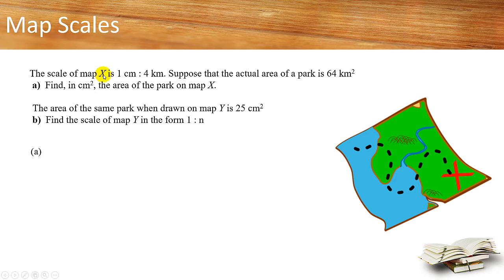So the scale for map X is 1 cm to 4 km. From here let's find the area scale. Let's square both sides. So 1 cm² will be equivalent to 4 km², which equals 16 km². 4 times 4 gets 16.